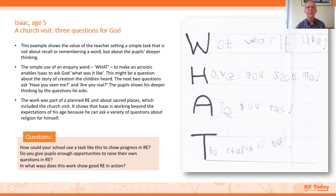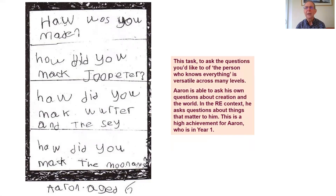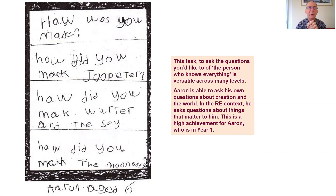RE is always about children. Here's a second example from Aaron, age six, year one, from Nottingham. He's also interested in asking God questions: 'How were you made? How did you make Jupiter? How did you make water and the sea? How did you make the moon and the sun?' The task is a bold one — not in the context of a church visit, just in the classroom: what would you like to ask the person who knows everything? Aaron's first question is really profound: if God made everything, how was God made?